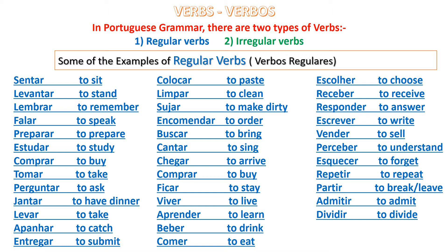In today's lesson, we will be talking about verbs. In Portuguese grammar, there are two types of verbs: regular verb and irregular verb. Let's begin with regular verbs. Around 99% of the verbs in Portuguese are regular. This means that they conform to one of three standard formulas.